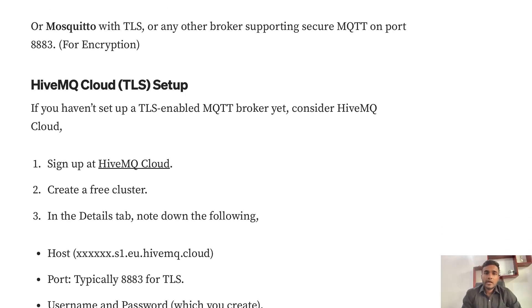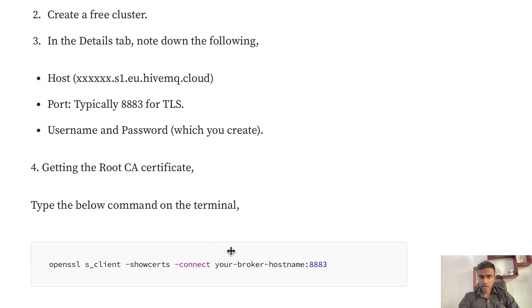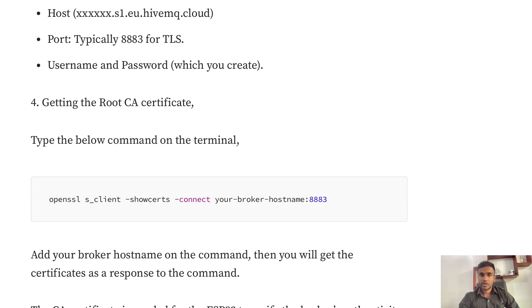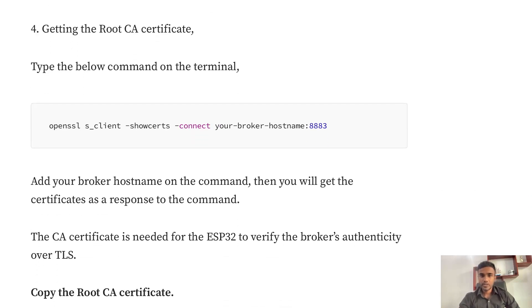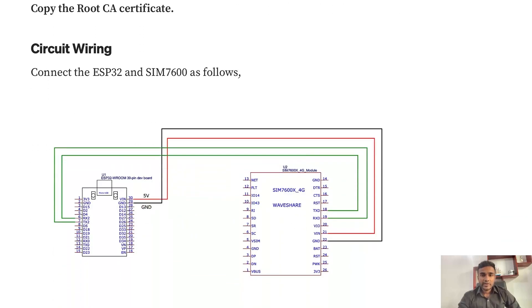To set up HiveMQ Cloud, click the provided link and create a free cluster. After that, note down the hostname, port, username, and password, and you will get the root CA certificate there. To retrieve the root CA certificate, run the provided command in the terminal, replacing the placeholder with your hostname — you'll receive the root CA certificate to note down and use later.